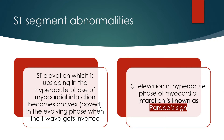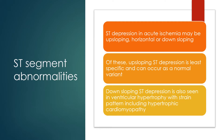ST elevation in the hyperacute phase of myocardial infarction is known as the PADIS sign. ST depression in acute ischemia may be upsloping, horizontal, or downsloping. Upsloping ST depression is least specific and can occur as a normal variant. Downsloping ST depression is also seen in ventricular hypertrophy with strain pattern, including hypertrophic cardiomyopathy.